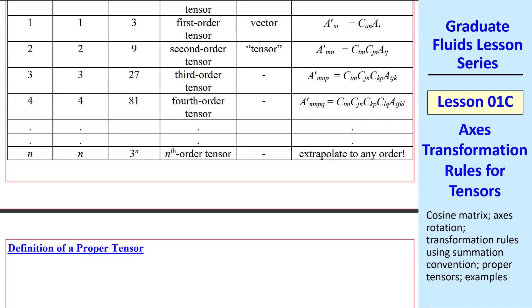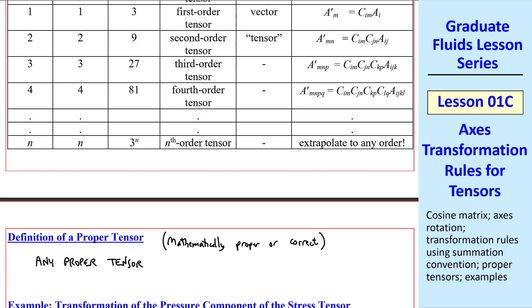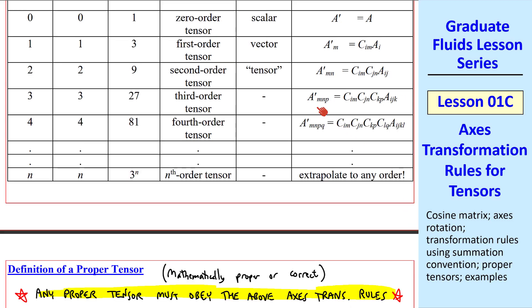Now I'll define a proper tensor, which means it's mathematically proper or correct. Any proper tensor must obey the above axes transformation rules. In other words, when we rotate the axes, the components of the rotated tensor must follow these equations. And this applies to tensors of any order.